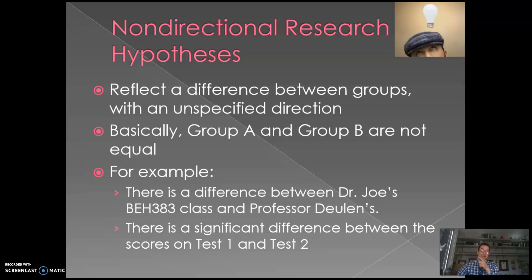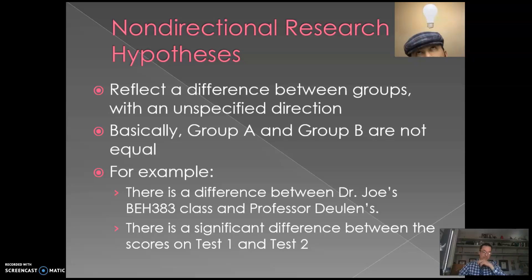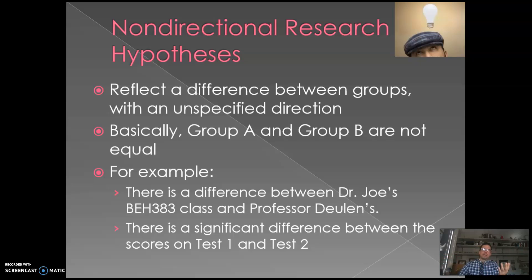Another example: there's a significant difference between scores on Test One and Test Two in that same class. Students never scored close to each other on exam one and exam two — they were never equivalent, just all over the place. These are non-directional hypotheses because I'm not saying scores go up or go down, just that they won't be equal. These hypotheses are good when theory or prior research doesn't indicate a clear direction — it's perfectly fine to say you think things will differ but not know which way.